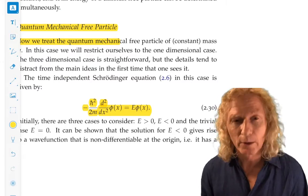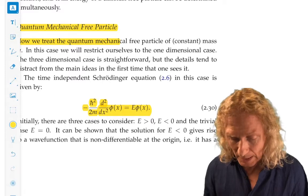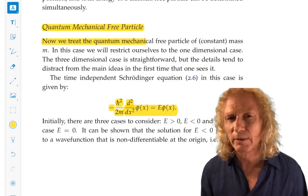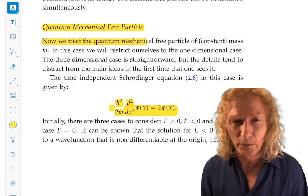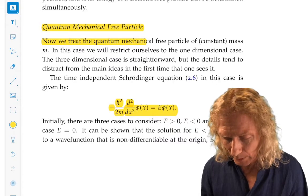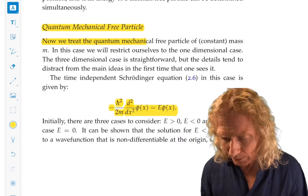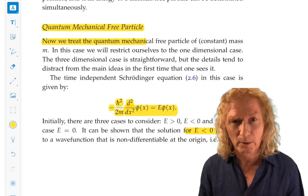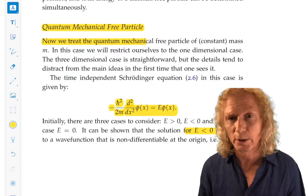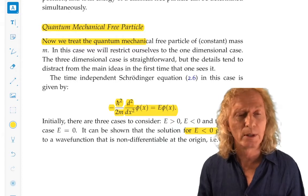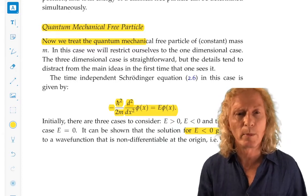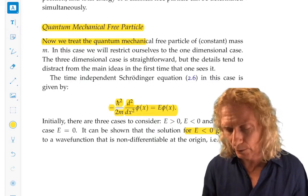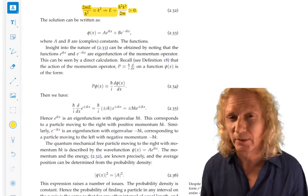E greater than zero, E equals zero, an easy case, and E less than zero. And I'll leave this as an exercise. It's an interesting exercise. You don't see it in all the books. It puzzled me the first time I learned this, but E less than zero is not physically realistic. For E less than zero, you can get a solution of the equation, but that solution doesn't satisfy the physical characteristics that we demanded and talked about in the last lecture. It has a cusp at the origin. So check that out for yourself if you have the time. It's a good exercise.